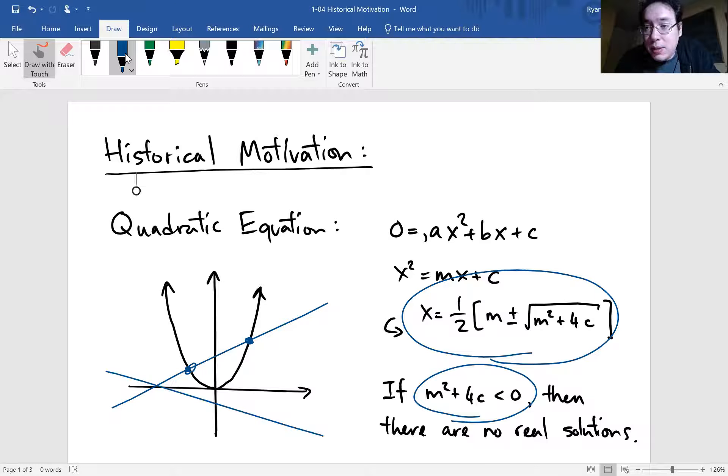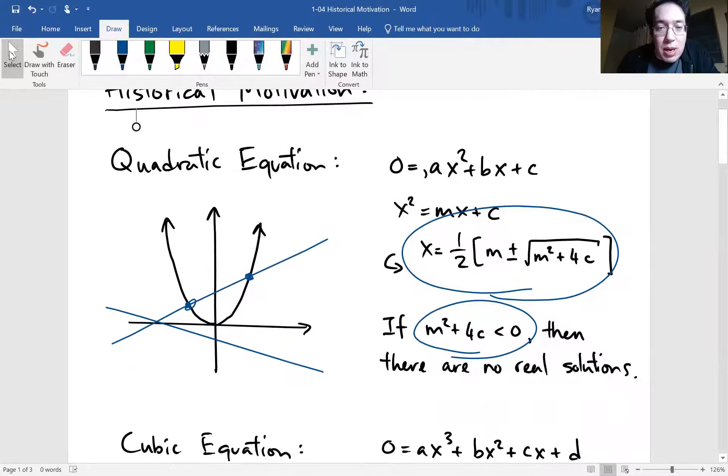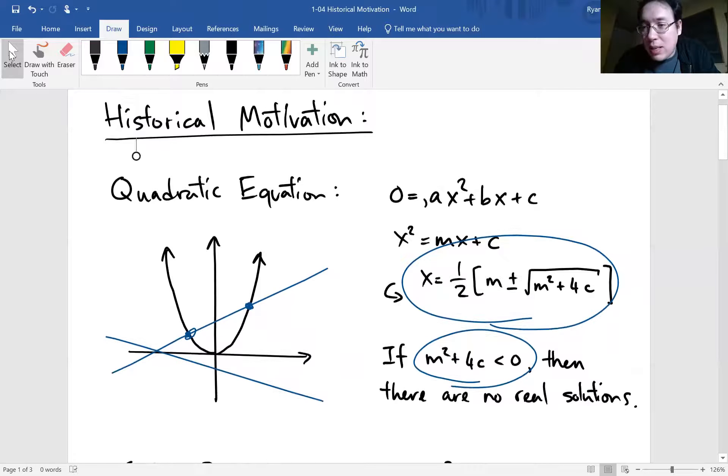So we could, at this point, try to introduce quote unquote solutions where this line that doesn't hit the parabola somehow intersects this parabola, but you can kind of see from geometric point of view. The parabola doesn't intersect the line. So why force some solution to this equation, right? There's really no strong incentive for mathematicians to consider what if square root of negative number made sense here.